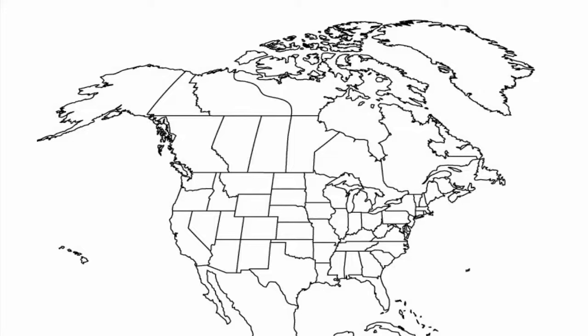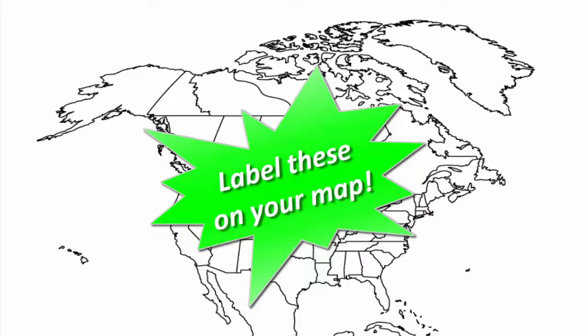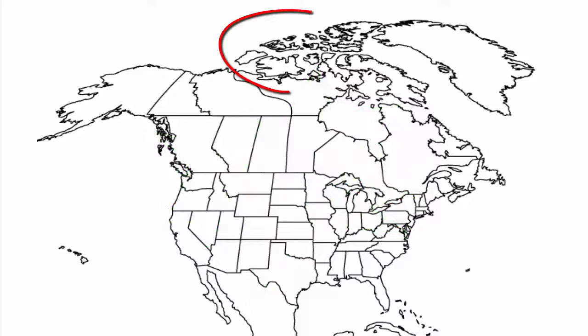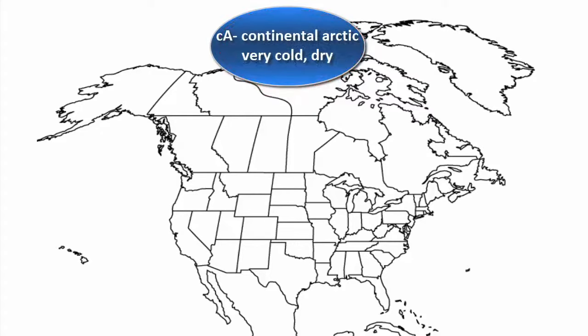There are five distinct types of air masses, each with unique properties based on where they form. Looking at a map of North America, the first source region is at the northernmost part in the Arctic region, where continental Arctic air masses form. Draw an oval and label it lowercase c, uppercase A. This is the map symbol for continental Arctic. Since it forms in a very cold area the air temperature becomes very cold, and since it forms over a completely frozen area the air becomes very dry. So a continental Arctic air mass is very cold and dry.